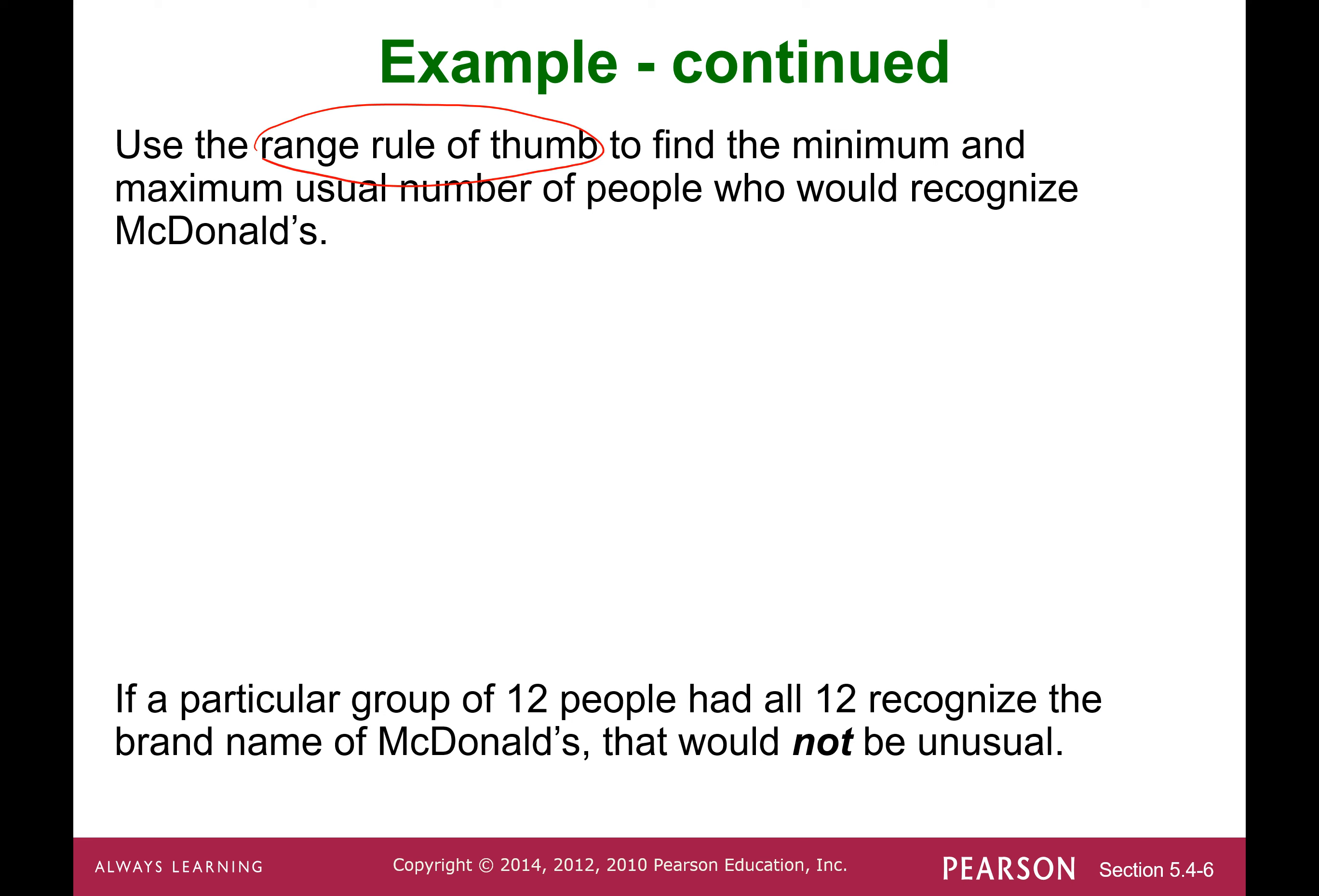Now use the range rule of thumb to find the minimum and maximum usual value of people who recognize McDonald's. Mu equals 11.4, sigma equals 0.75. The maximum usual value equals mean plus 2 standard deviations, so 11.4 plus 2 times 0.75, which turns out to be 12.9.